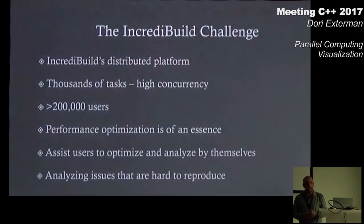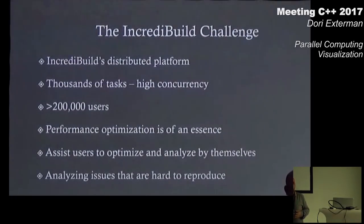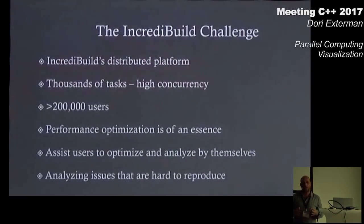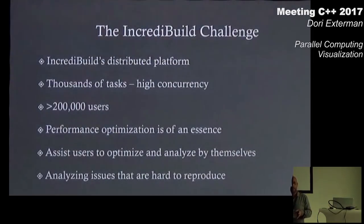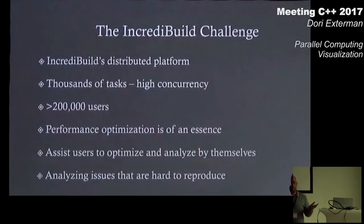At IncrediBuild we had a similar challenge, and part of what I wanted to share is how we overcame it and what conclusions we drew from 15 years of developing the product. For the audience who doesn't know what IncrediBuild does: IncrediBuild is a distributed platform that allows you to distribute compute processes across cores in your network. Instead of having only your local cores in your laptop, you can use all the idle cores in your network — so instead of running only eight compilations in parallel, you can run 200 or 300 compilations in parallel across the network.